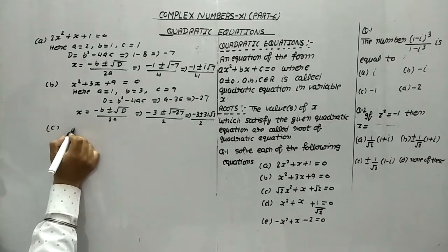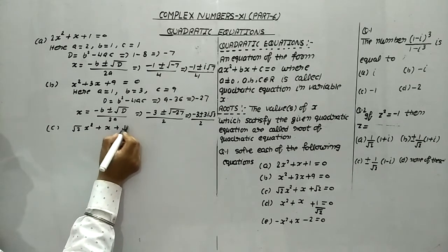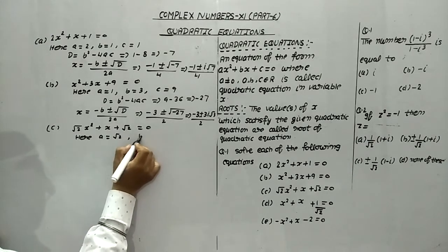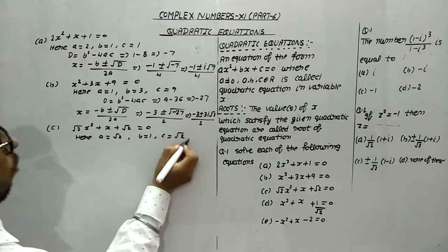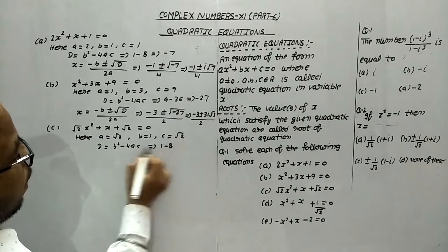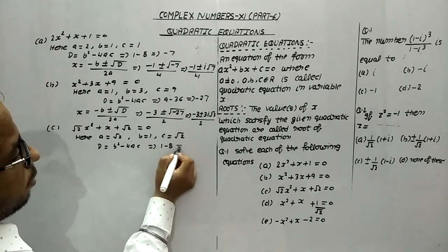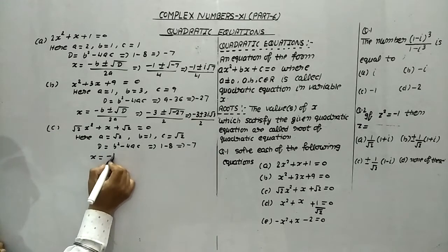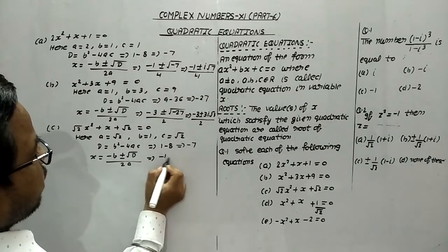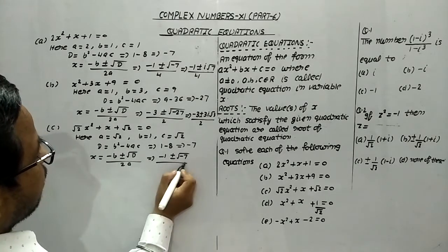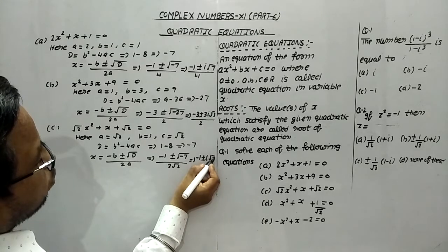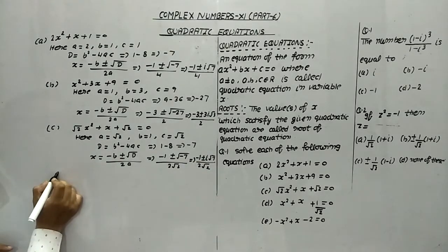Part (c): √2·x² + x + √2 = 0. Here a = √2, b = 1, and c = √2. Calculate D: b² − 4ac = 1 − 4·√2·√2 = 1 − 8 = −7. So x = (−b ± √D) / 2a = (−1 ± i√7) / (2√2). This is the way to do this part.